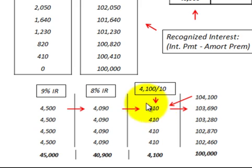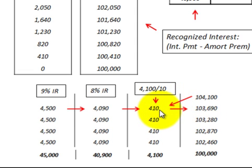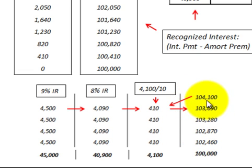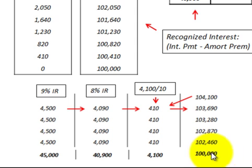Taking this premium amortization amount, we subtract it from the carrying value of the bond. We started out with $104,100; we subtract the $410 premium amortization and come up with a new carrying value of $103,690. This carrying value is reduced each period by the $410 premium amortization amount until we reach the last payment when the bond becomes due, at which point the carrying value is $100,000 — matching its face value.